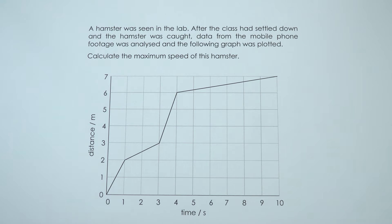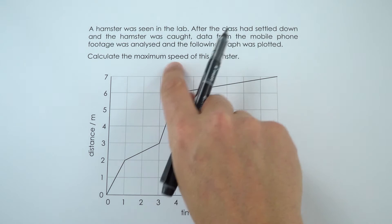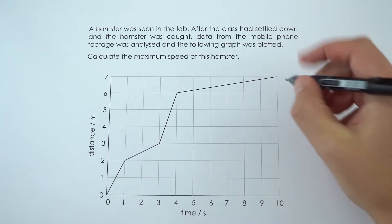So this question is all about a distance-time graph of a hamster when it was seen in a lab. And what we need to do is work out the maximum speed of the hamster, which corresponds to the maximum gradient of this line here.